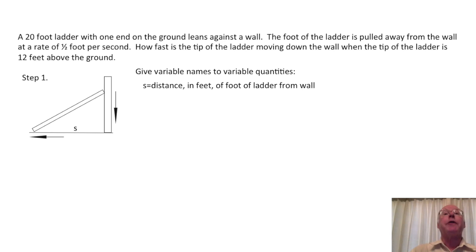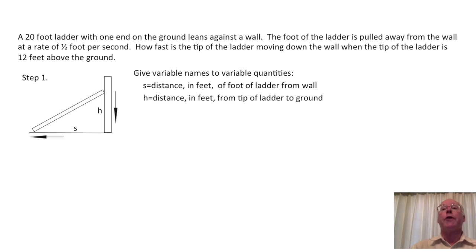One important variable is the distance s, the distance of the foot of the ladder from the wall. Let s in feet be the distance of the foot of the ladder from the wall. We put s on the diagram. Units are very important in these problems, so whenever possible give units to these measurements. In this problem we'll use feet for length. The distance of the tip of the ladder from the ground is also important. We want to know how fast this tip is moving as it slides down the wall. So let h equal the distance in feet from the tip of the ladder to the ground, and we also put h in the diagram.